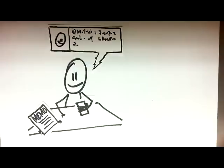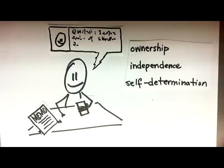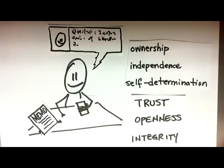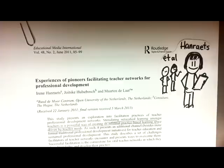Sounds like it has what the Liverpool exercise was missing. Ownership, autonomy, degrees of self-direction, trust, openness, and integrity. I think I'm going to like this.